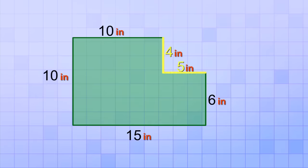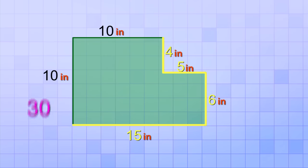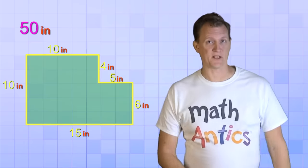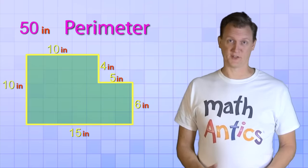4 plus 5 plus 6 equals 15, and then 15 plus 15 equals 30, 30 plus 10 equals 40, and last of all, 40 plus 10 equals 50. So, the sum of all the sides is 50 inches. And that's the perimeter of this shape.